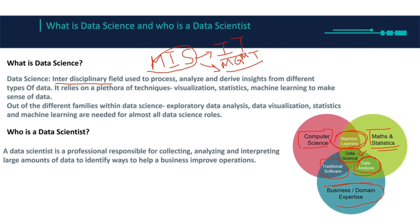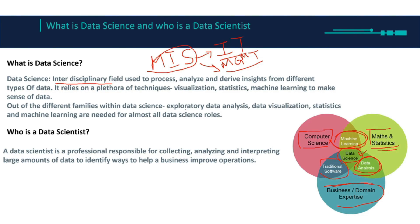Basically, data science is the study of data, which involves developing methods of storing and analyzing data to effectively extract useful information so we can make informed decisions. We have a bunch of different types of data — images, audio, text, numbers — and we want to analyze that data so we can extract useful information, then take a decision from that information to improve our business. That is the main idea of data science.